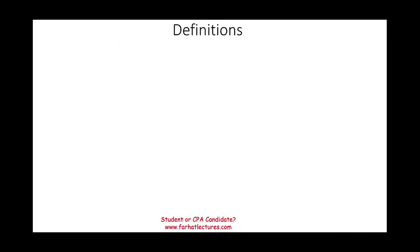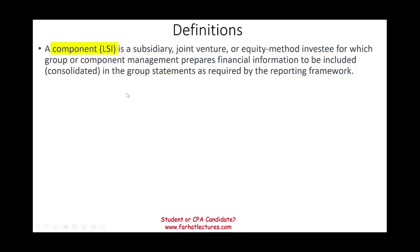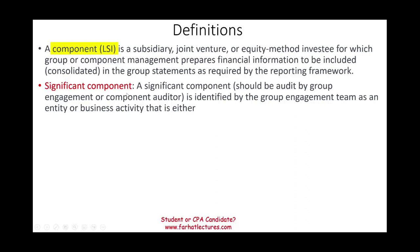We need to learn a few definitions. First, a component — we already covered it briefly. In this example, Lebanese Shipping Inc. is the component, which is this subsidiary. It could be a subsidiary, a joint venture, or an equity method investee for which the group or component management prepares financial statements to be included and consolidated in the group financial statement as required by the framework. Any company — a subsidiary or a joint venture that we need to include — is called a component.